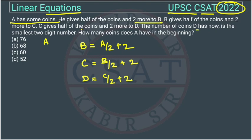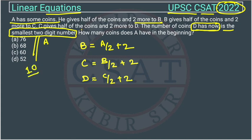The number of coins D has now is the smallest two digit number. This is very important. Now D is having how many coins? D is having the smallest two digit number. The smallest two digit number is 10. This is very important in this question. If you can understand this, you can solve it.